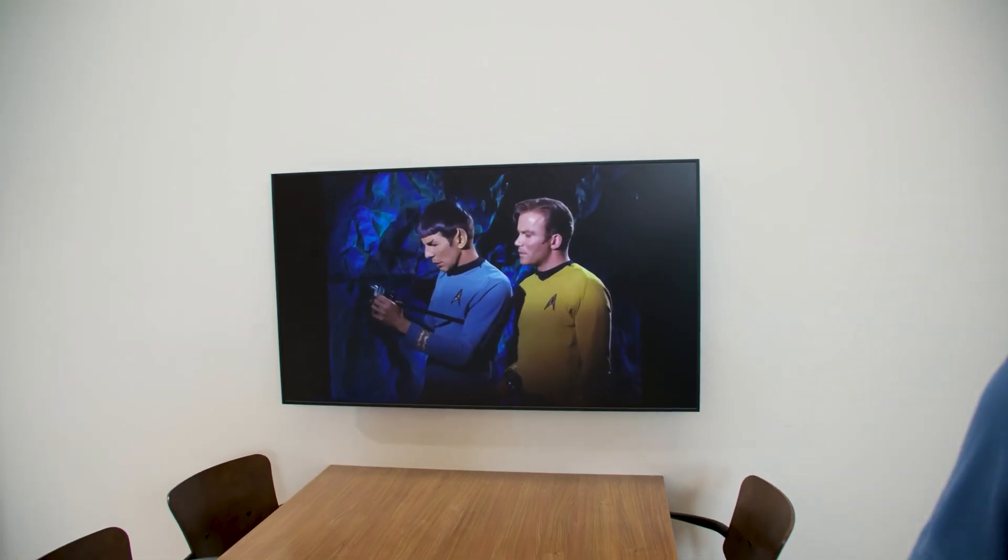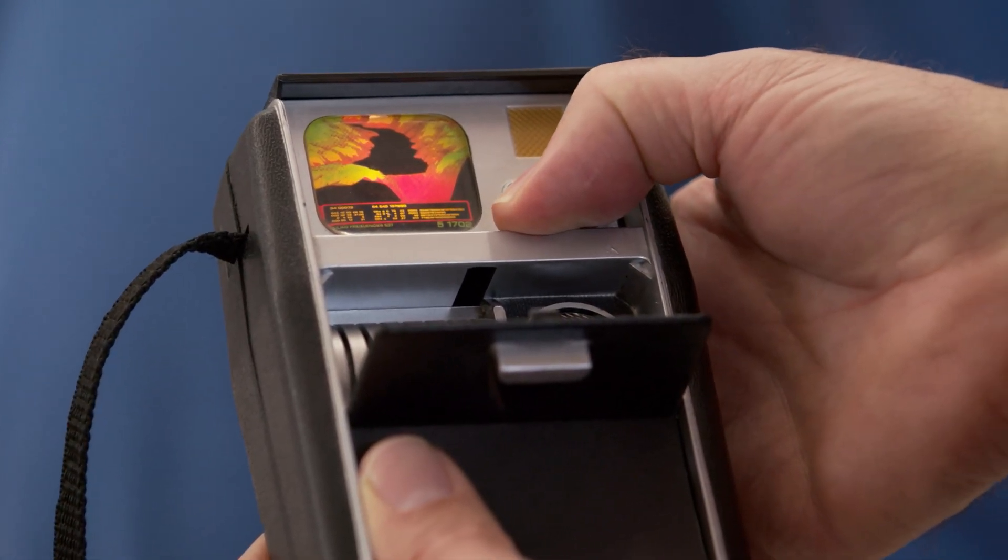In Star Trek, the crew of the Starship Enterprise uses tricorders to monitor their health and scout strange new worlds.